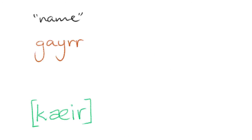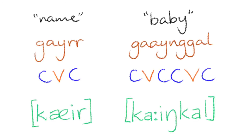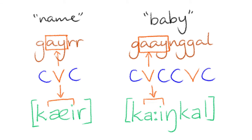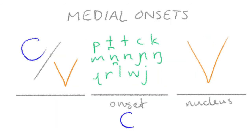For example, in the words 'geod' and 'geingol', the diphthongs are realised as the nucleus, whereas the consonants following them are realised as codas. And finally, any consonant may be used for any medial onset.